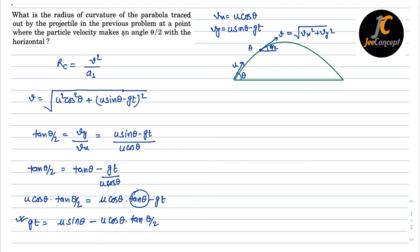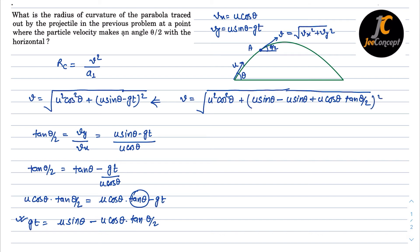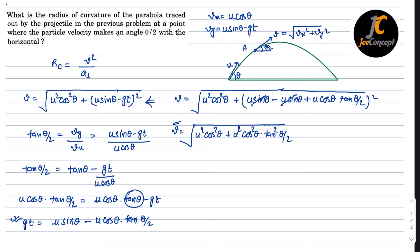Now substituting the value of g·t into the velocity expression, v equals sqrt(u²·cos²(theta) + (u·sin(theta) - g·t)²). The g·t value is u·sin(theta) minus u·cos(theta)·tan(theta/2), so u·sin(theta) cancels out, and the equation becomes v equals sqrt(u²·cos²(theta) + u²·cos²(theta)·tan²(theta/2)). We have now successfully eliminated g·t.